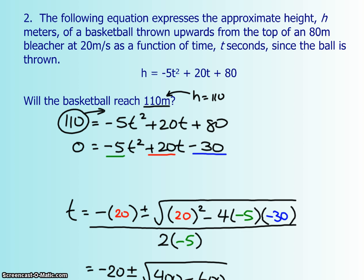I just want to talk about a word problem really quickly, and I've actually provided the solution already. The following equation expresses the approximate height h meters of a basketball thrown upwards from the top of an 80 meter bleacher at 20 meters per second as a function of time t seconds since the ball is thrown. They gave us this equation, and now they're asking, will the ball ever reach 110 meters? I'm essentially taking this 110 and putting it into my h value. Then what I'm going to do is actually solve for t when the height is actually 110.